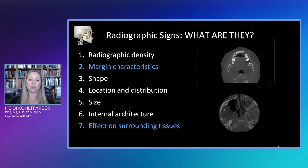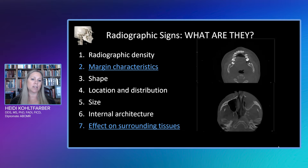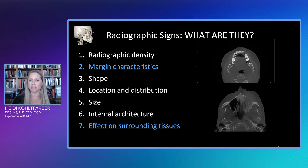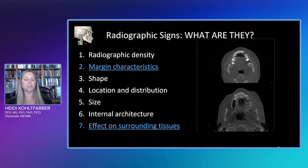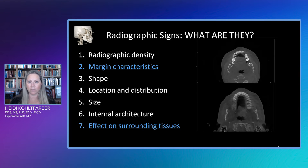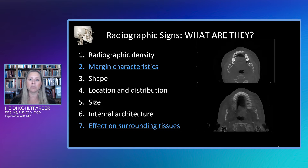Those radiographic signs are: radiographic density, marginal characteristics, shape, location and distribution, size, internal architecture, and effects on surrounding tissues. The marginal characteristics as well as the effects on surrounding tissues have been underlined and highlighted, because they are the most important in letting us know how aggressive a particular entity is.